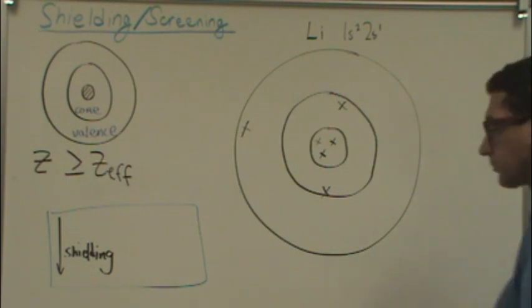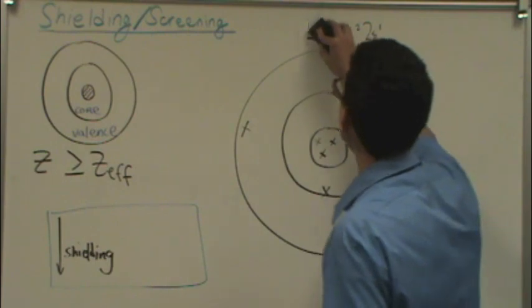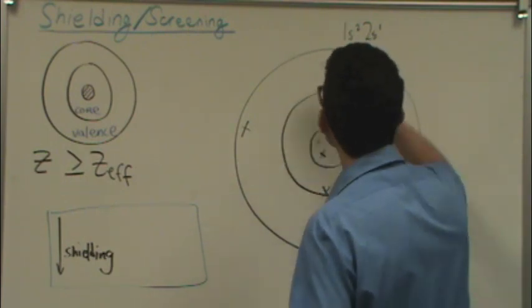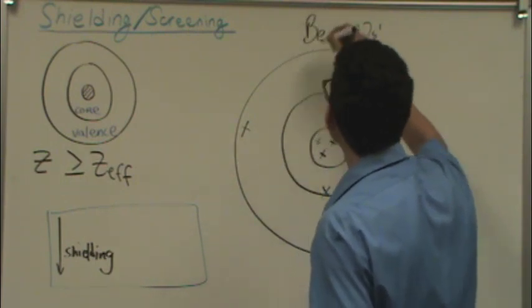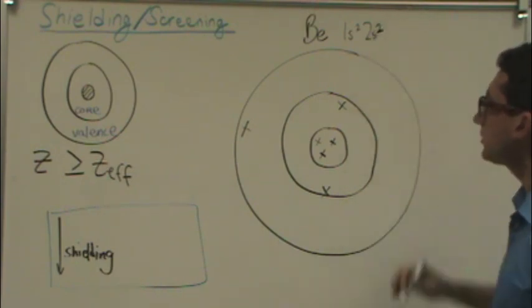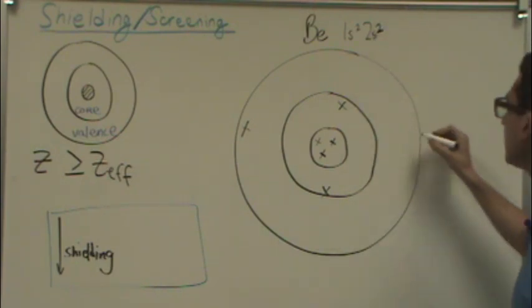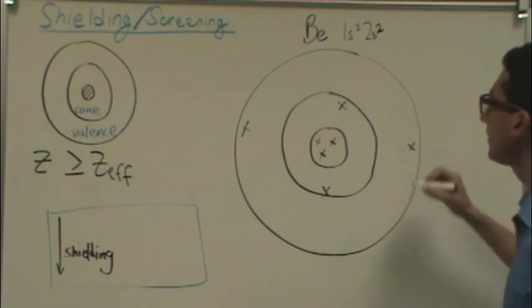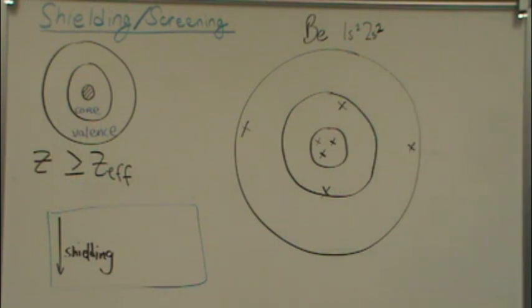Now, I'm going to go to the right one on the periodic table to beryllium. There's beryllium. It's 1s2, 2s2. So now what that means is I'm going to add a second valence electron here. Because as we go along a row, we're just adding valence electrons.